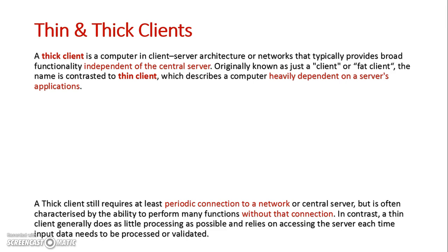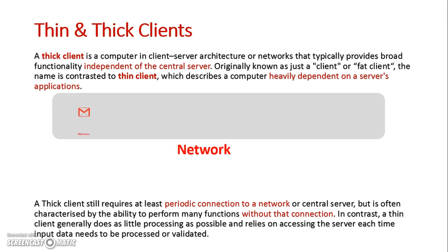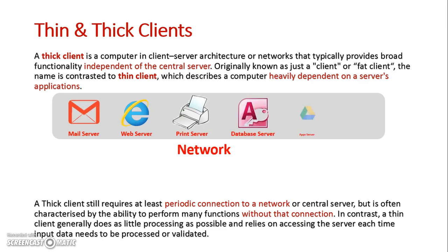So let's look at this graphically. Here's my network and all my servers. I've got a mail server, a web server, print server, database server, app server, and file server. So these are all the things available on my network.